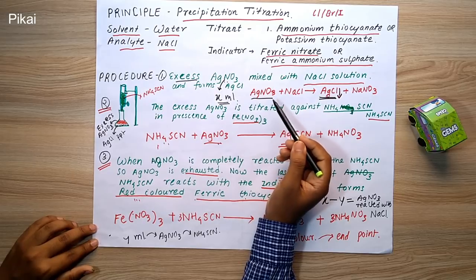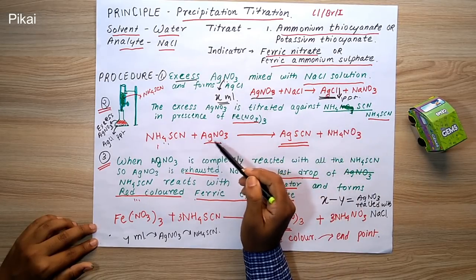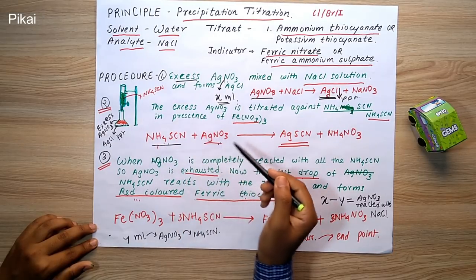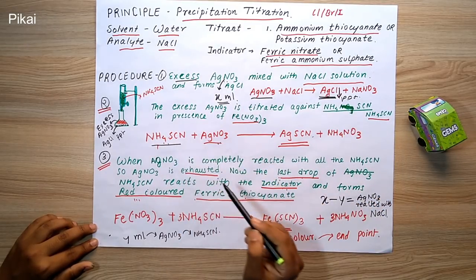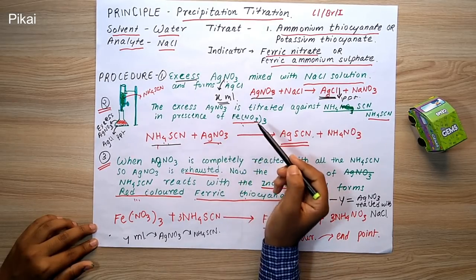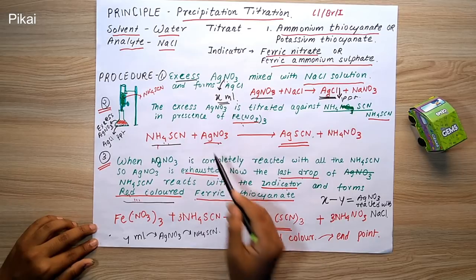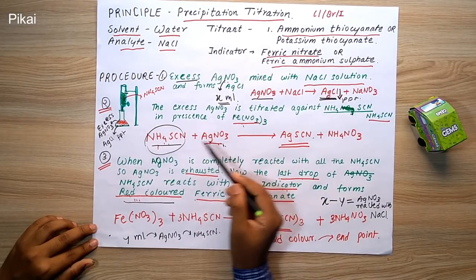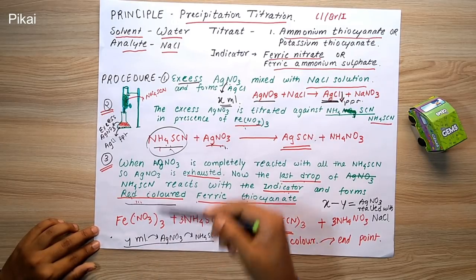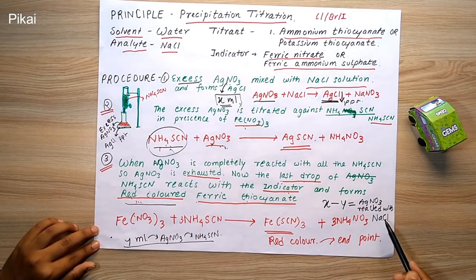To summarize: excess AgNO3 reacted with NaCl to form the AgCl precipitate. The remaining AgNO3 was then reacted with NH4SCN to form AgSCN (silver thiocyanate), with ferric nitrate as the indicator. The ferric nitrate gives a red color with the last drop of NH4SCN once all AgNO3 is exhausted. Subtracting Y mL from the initial X mL of AgNO3 gives the amount that reacted with NaCl.